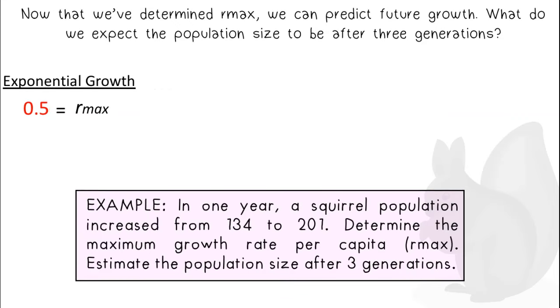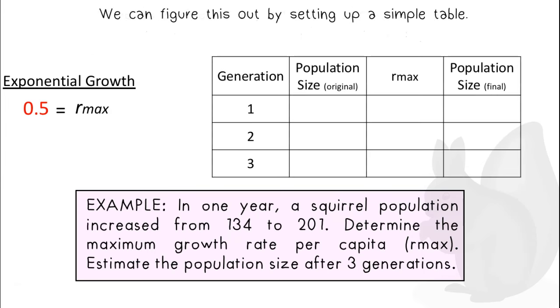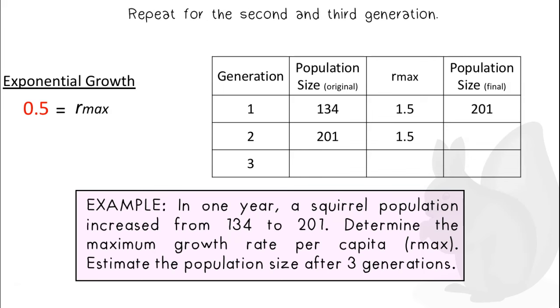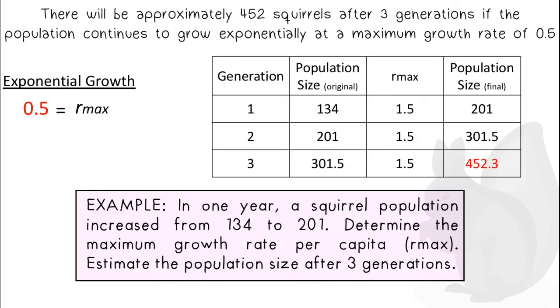Now that we have determined rmax, we can predict future growth. What do we expect the population size to be after three generations? We can figure this out by setting up a simple table. Start with the original population size given. Multiply the population by rmax plus 1. Of course, as the example stated, we now have a population of 201. Repeat for the second and third generation. There will be approximately 452 squirrels after three generations if the population continues to grow exponentially at a maximum growth rate of 0.5.